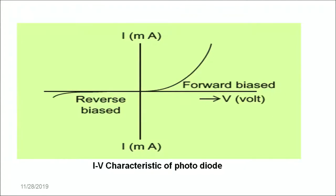So the prime region in which the photodiode works is the first quadrant of the graph, that is the forward bias. This is the region where the photodiode works. So when the light falls on the photodiode, there is a sharp increase in the current and the diode conducts in the forward bias. The basic use of photodiode is as receivers for various remote devices.